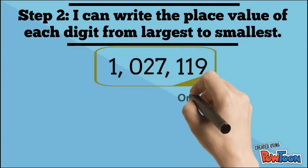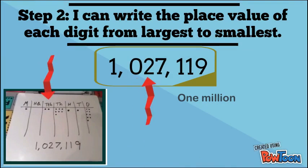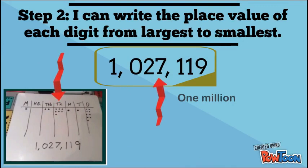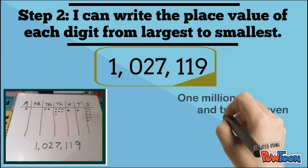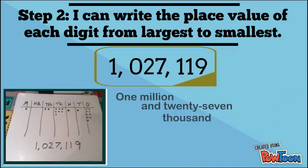Step 2: I can write the place value of each digit from largest to smallest. So the next digit is zero, so we can skip the hundred thousand. The next digit is twenty thousand and then seven thousand, which we write as twenty-seven thousand. This one is a hundred, so it's written as one hundred.